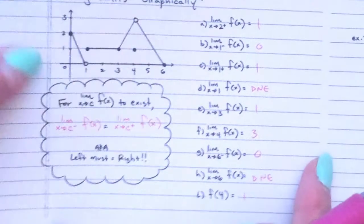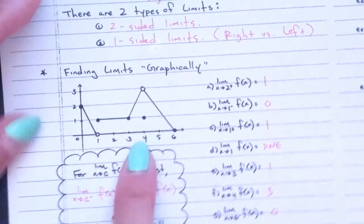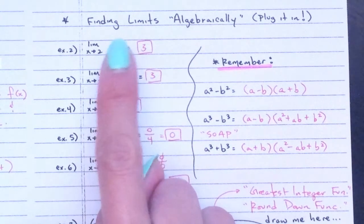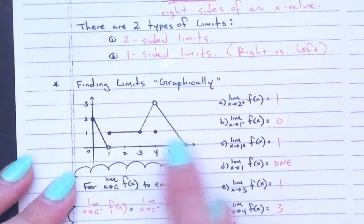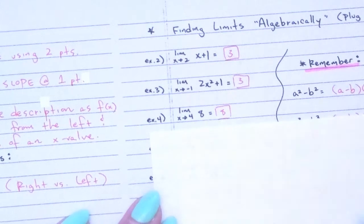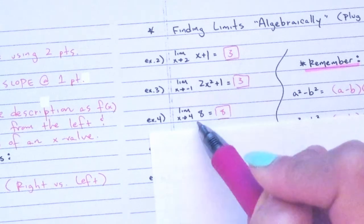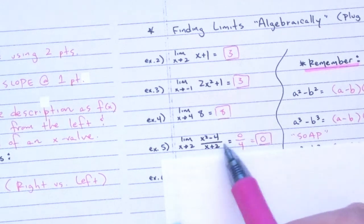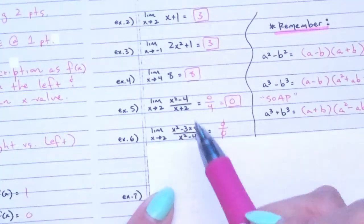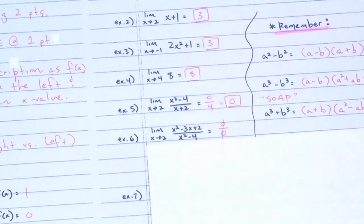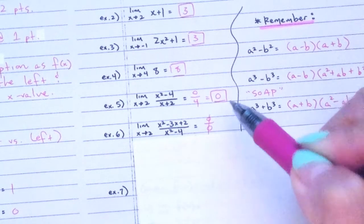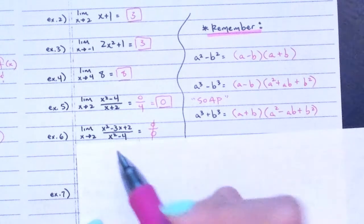Finding limits algebraically: for lines, there are no holes or gaps, so you just plug in the x value. Plugging in gives 8 for a line. Plugging in gives 0 over 4, which is 0 — zero divided by any number is zero. But if plugging in gives zero over zero, that is not 'does not exist' — zero over zero has no answer yet, and you must keep going.